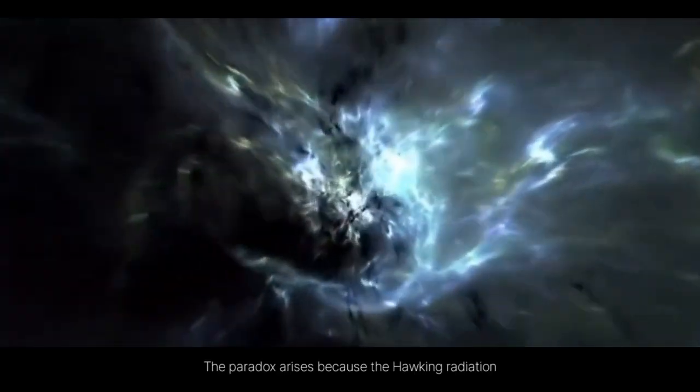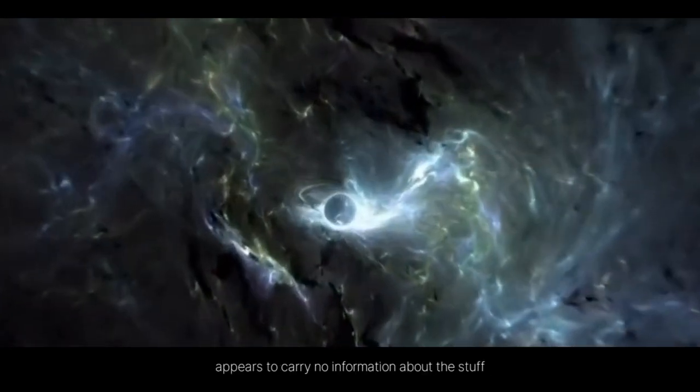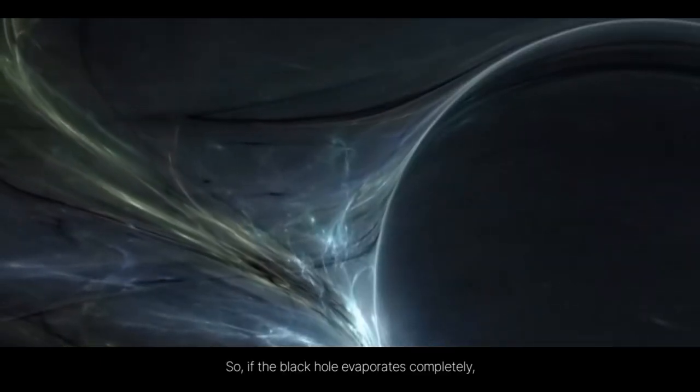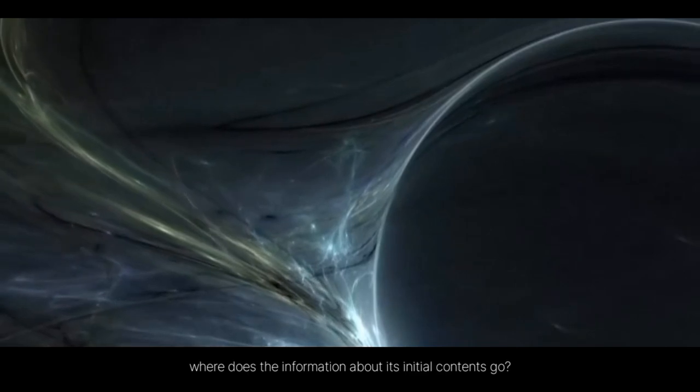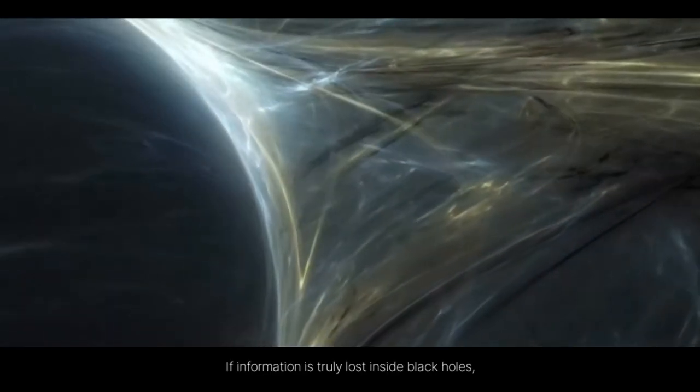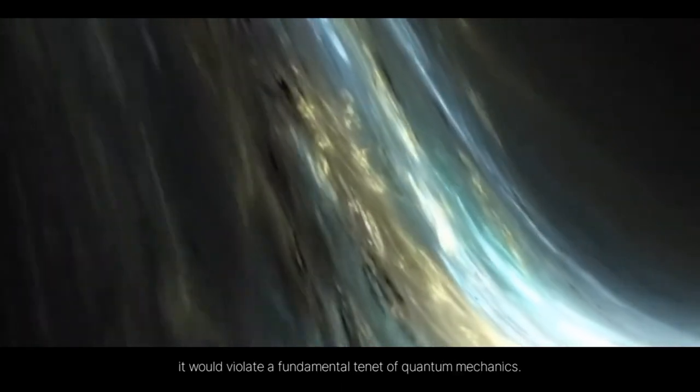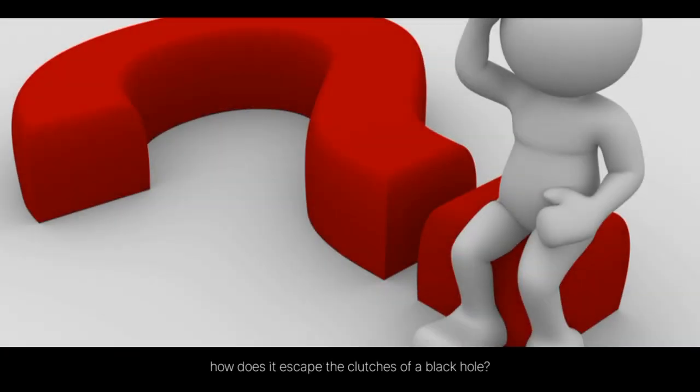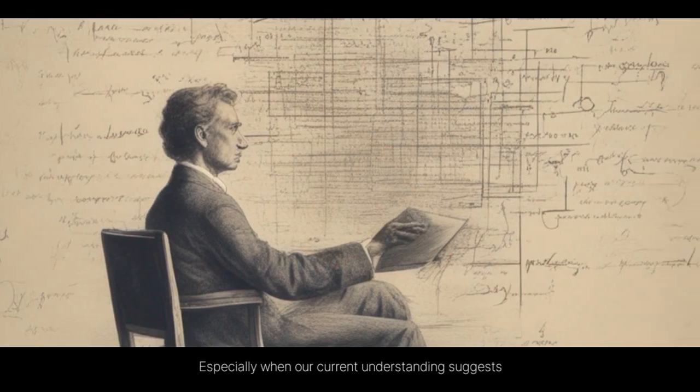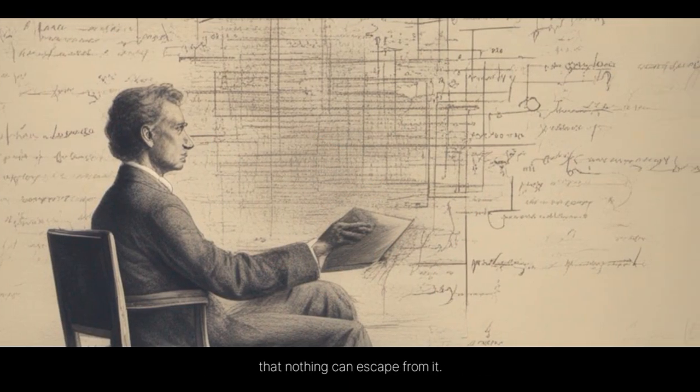The paradox arises because the Hawking radiation appears to carry no information about the stuff that fell into the black hole. So, if the black hole evaporates completely, where does the information about its initial contents go? If information is truly lost inside black holes, it would violate a fundamental tenet of quantum mechanics. On the other hand, if information is somehow preserved, how does it escape the clutches of a black hole, especially when our current understanding suggests that nothing can escape from it?